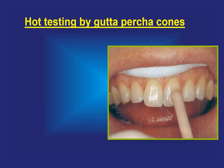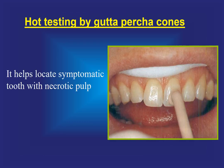Hot testing by gutta-percha cones: we heat the gutta-percha cone and place it on the labial side of the tooth. This test helps locate a symptomatic tooth with a necrotic pulp.